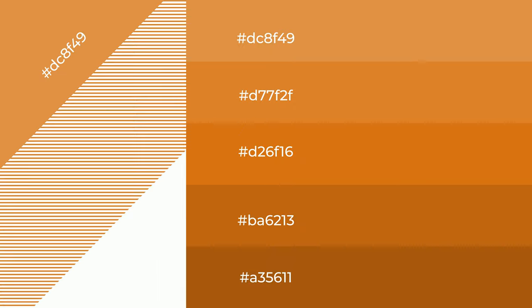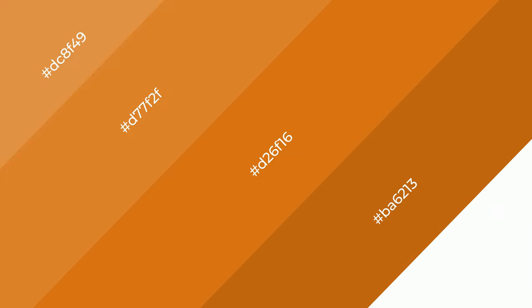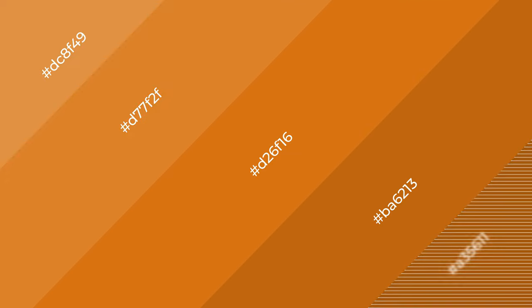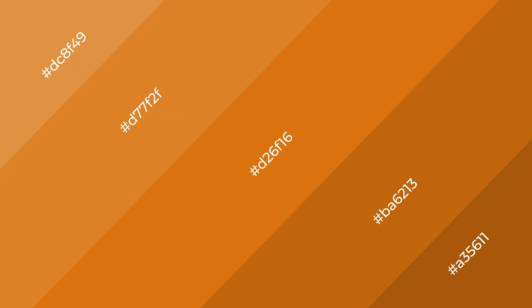To generate shades of a color, we add black to the color, and it is used in patterns and 3D effects. Layers and shades create depth and drama. Autumn maple is a warm color and it emits a cozier and active emotion.